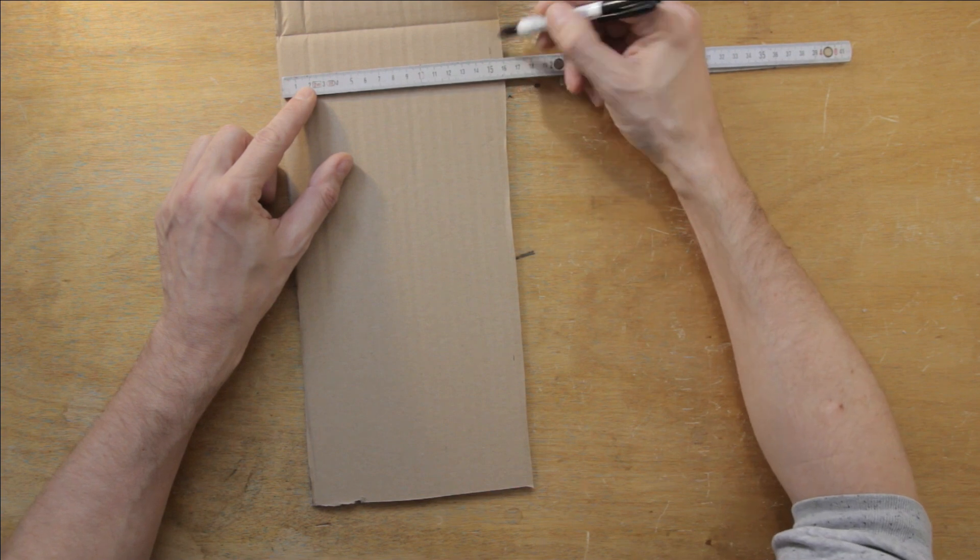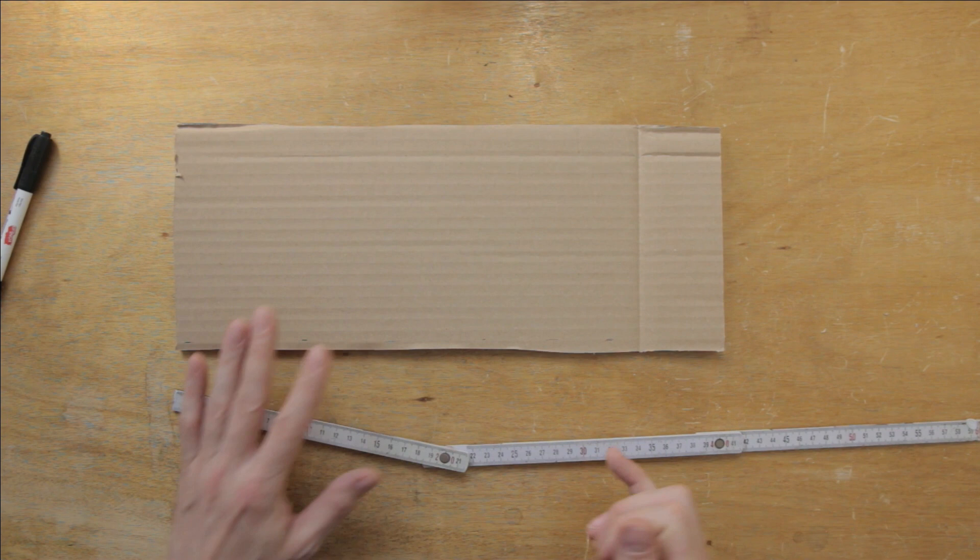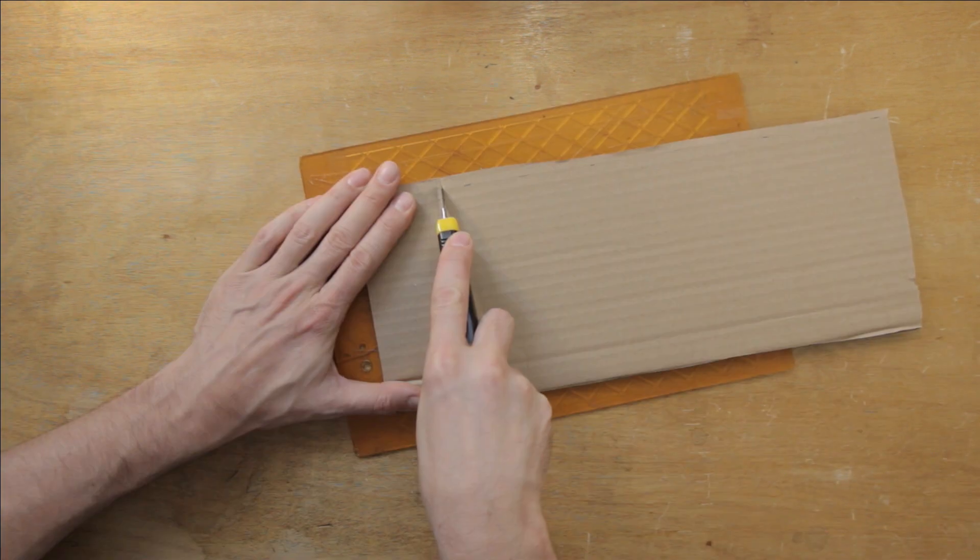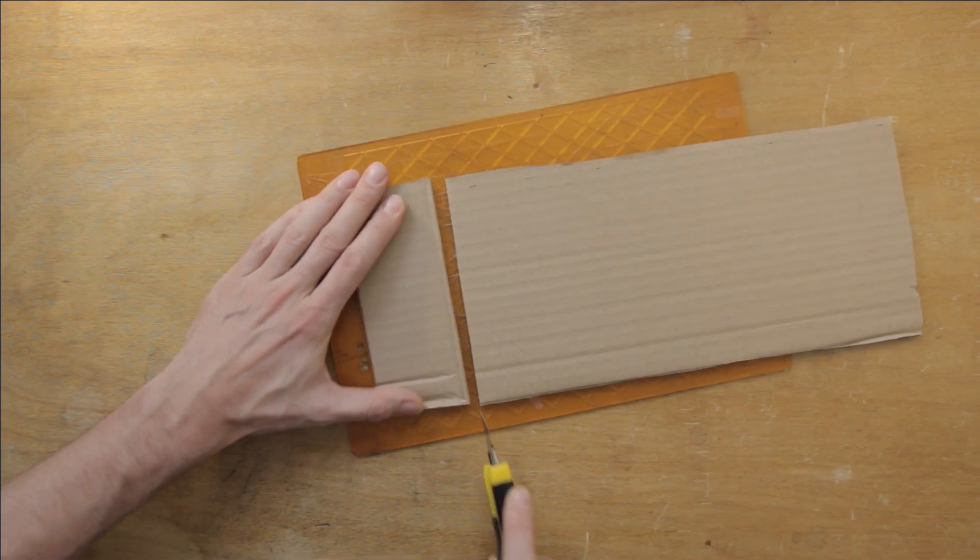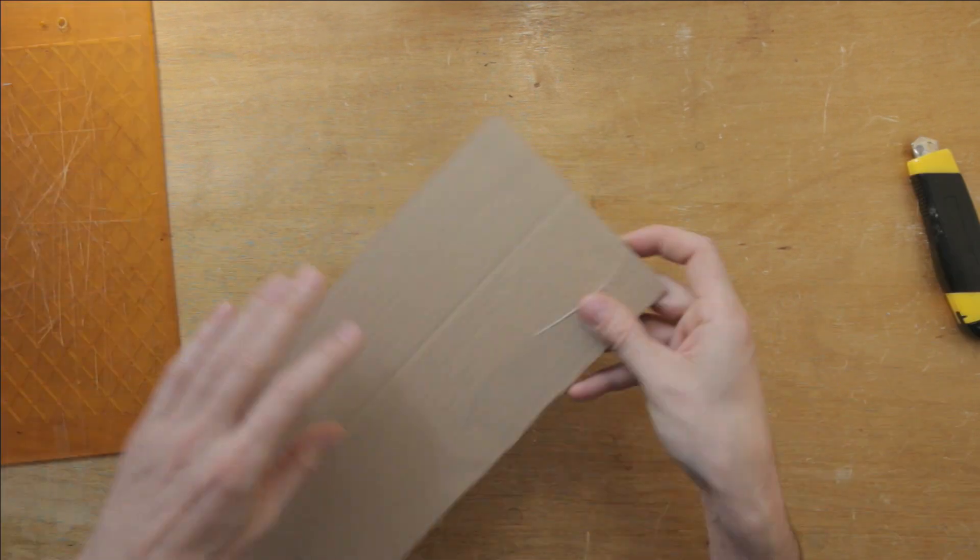First thing we need to do is cut the cardboard to size. For this instrument, we'll need a piece which is roughly 15 by 35 cm. This piece has a bend in it, which I don't want to include, so I'll cut here, even if it's a bit shorter than 35 cm.